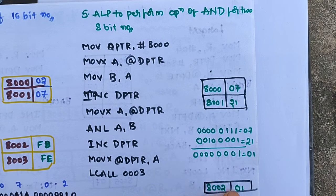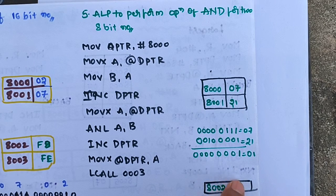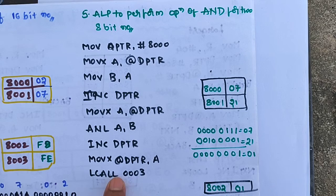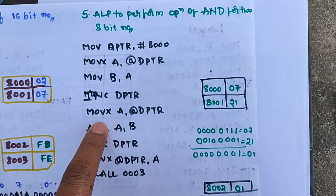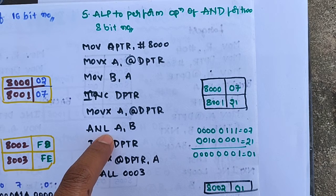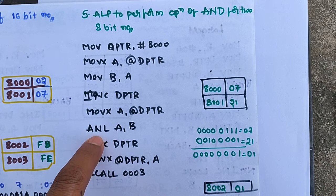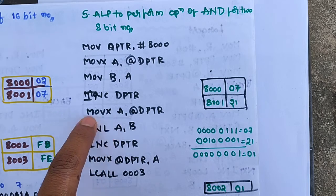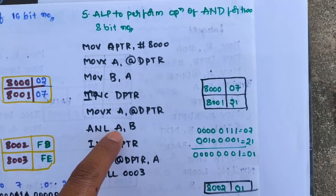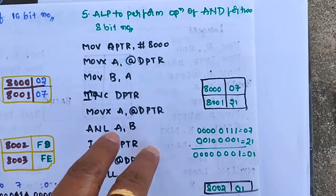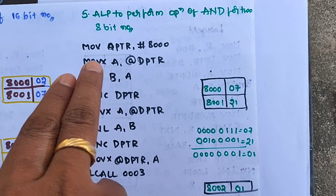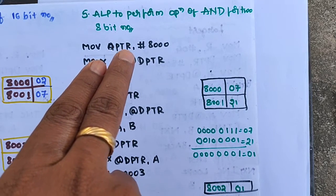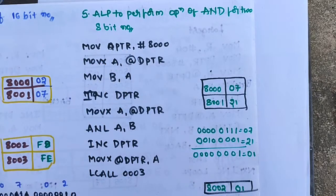After that, terminate the program. To perform OR operation, replace ANL with ORL. For XOR operation, replace ANL with XRL. You can implement all three logical operations using assembly language programs.